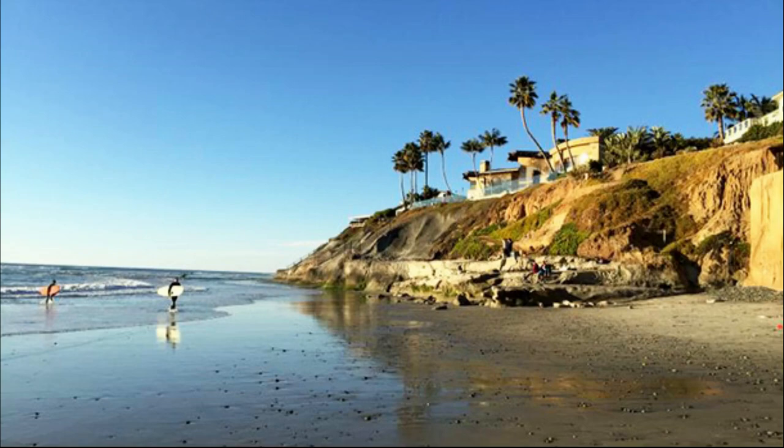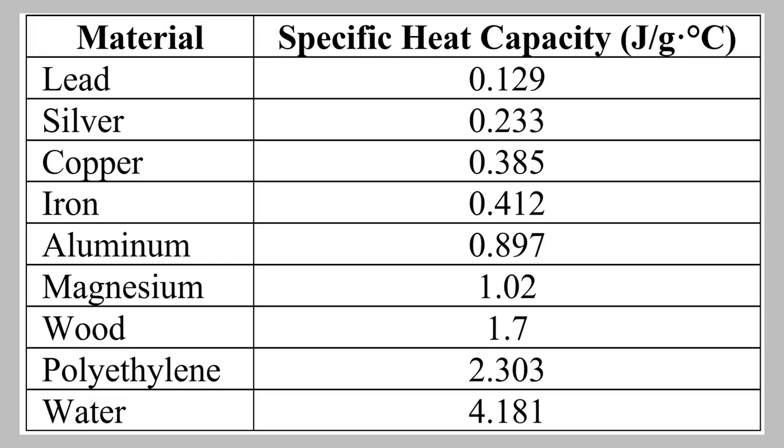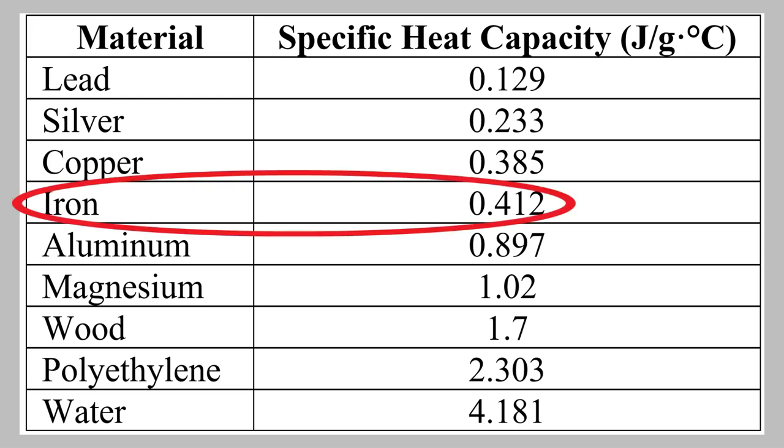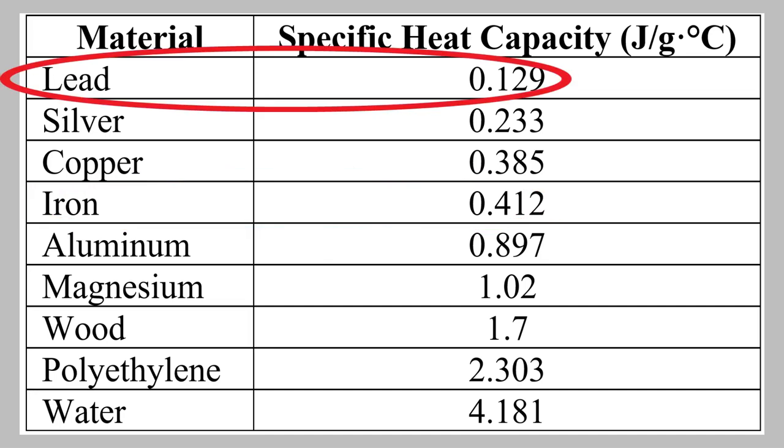Before we move on, notice the units of the specific heat capacity: joules per gram degrees Celsius. That means that, for example, it takes 0.412 joules of heat to raise the temperature of 1 gram of iron by 1 degree Celsius. In comparison, it only takes 0.129 joules of heat to raise the temperature of a gram of lead by 1 degree.